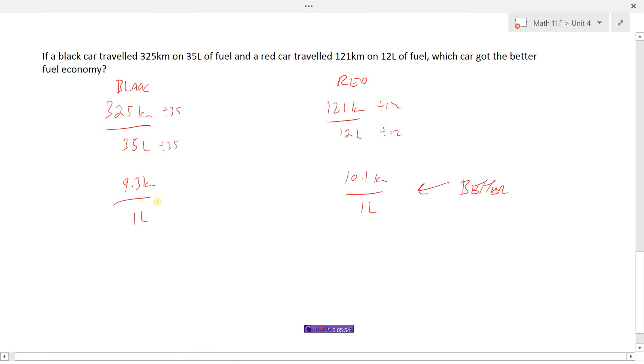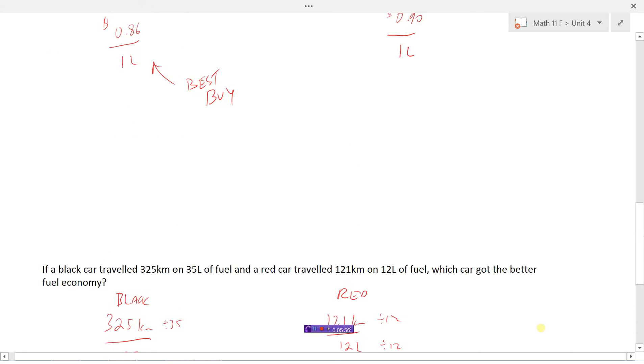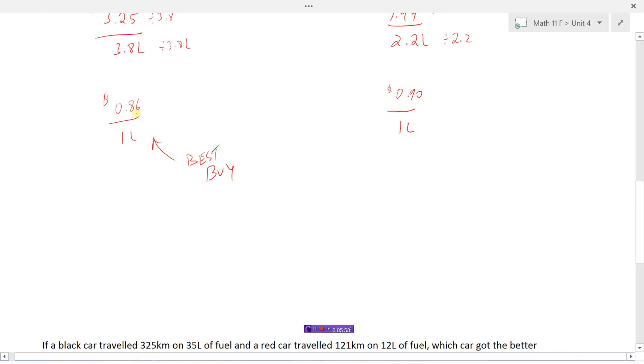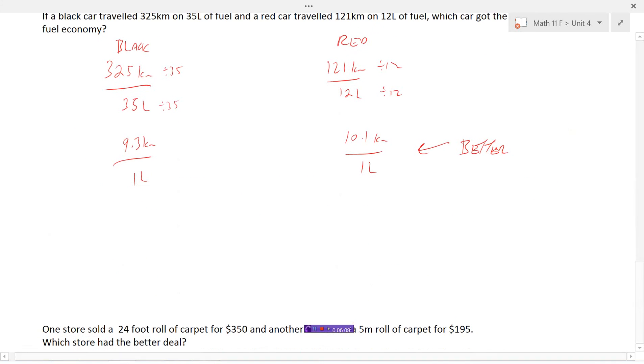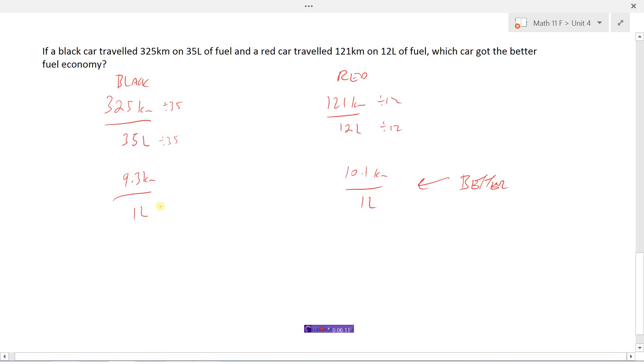So you got to look at the question. Like this one back up here, we were looking for the smaller number because this was money, and obviously you want to spend less money per liter of juice. So this would be the best deal. But when you're driving the car, if you're putting a liter of fuel in the car, you want to go as many kilometers as you can. So here we're looking for the biggest number. This would be the most fuel efficient vehicle.